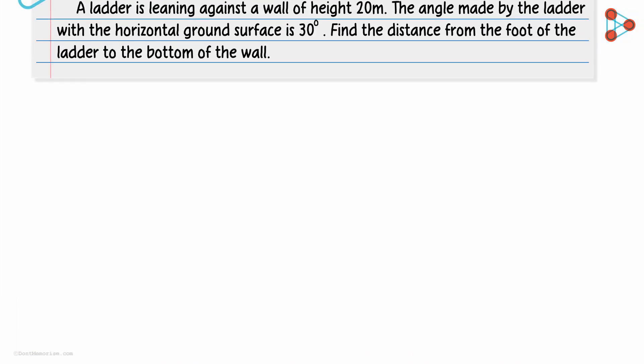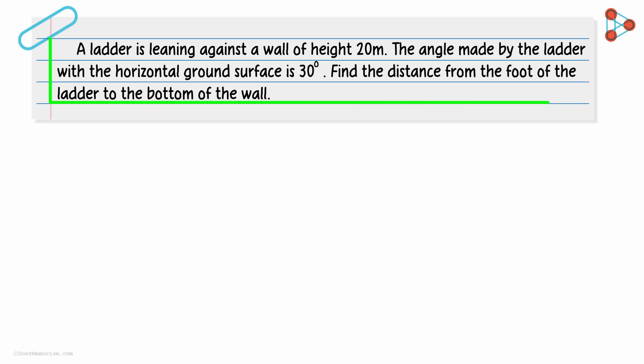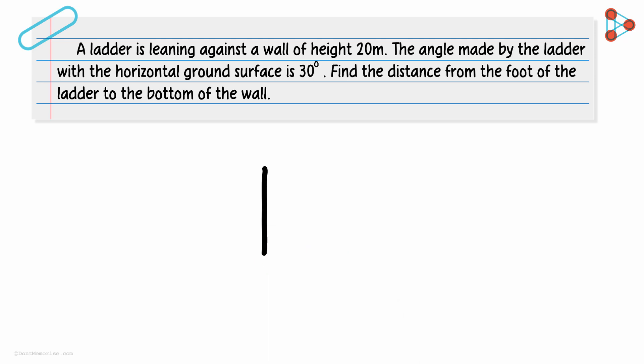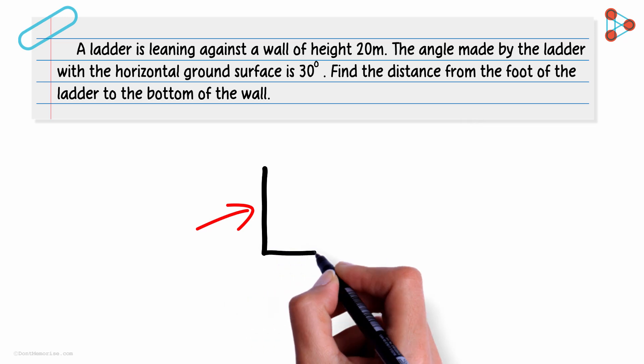Let's start with a simple example. Read the question carefully and try to form a right triangle. Here we are given a wall. You can represent the wall with a vertical line like we have done here. You don't really need to draw an actual wall. It's obvious that this wall makes an angle of 90 degrees with the ground surface.